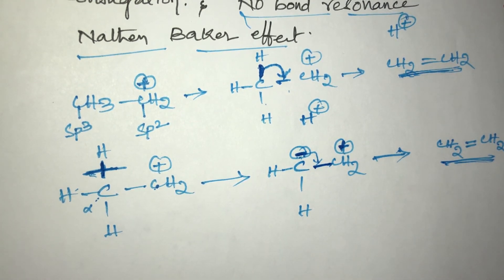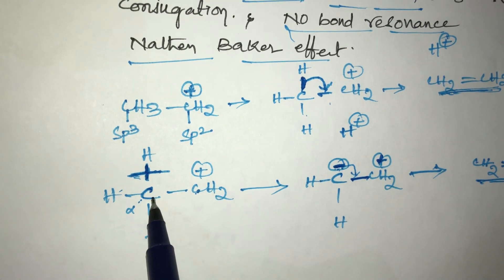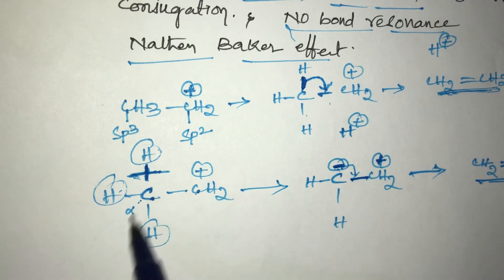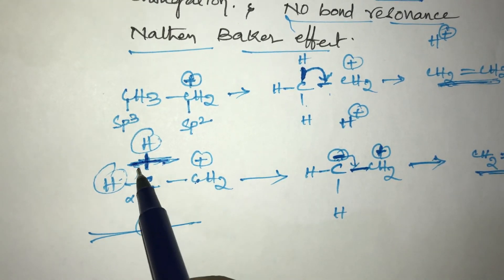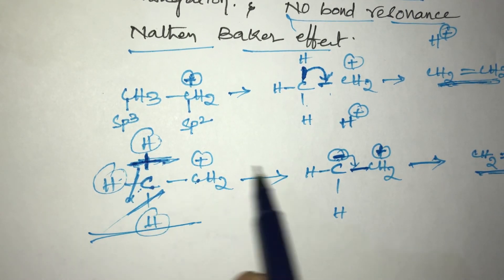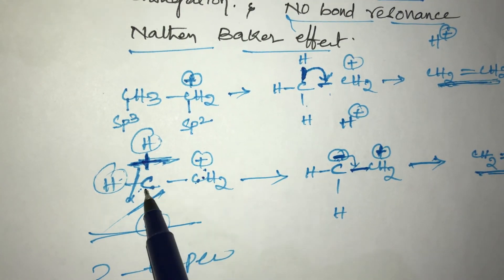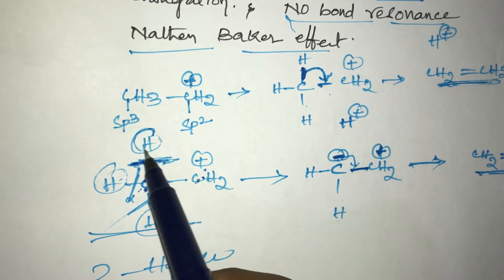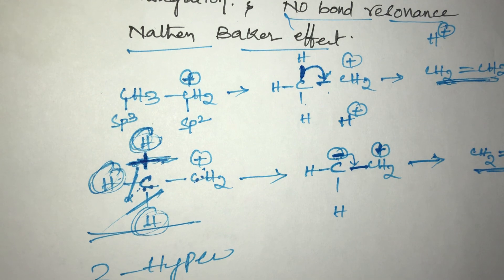So here the positive charge next carbon is called the alpha carbon, and this alpha carbon contains three alpha hydrogens. Therefore, three hyperconjugates are possible in this compound. To calculate hyperconjugates, remember: more alpha hydrogens means more hyperconjugates. Hyperconjugates depend on the number of alpha hydrogens.